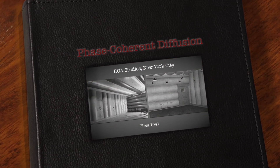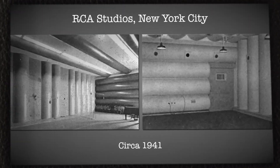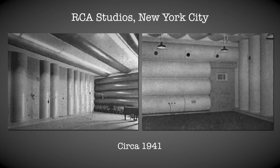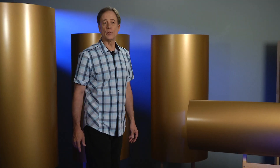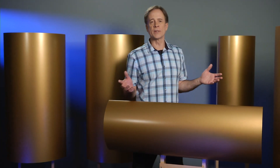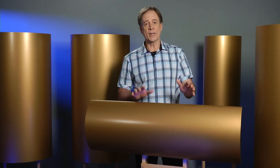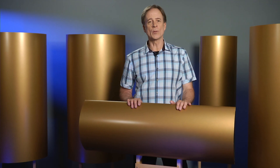By the way, this isn't new science. RCA studios used phase coherent diffusion back in the 1940s. Phase coherent diffusers smoothly spread out reflections, reducing hot spots and allowing us to use less absorption. This improves our hearing — it's the way our brains work. Our brains are really amazing, capable of hearing location, size, and type of sound almost instantly given the right acoustics.